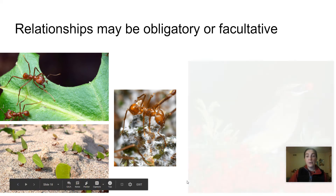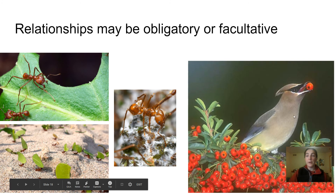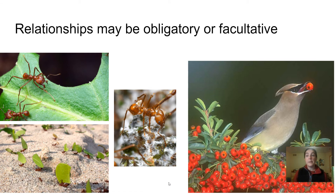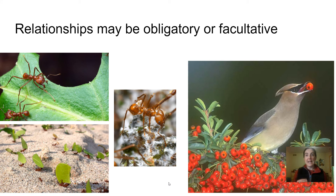A facultative mutualism would be something like a bird eating a berry and then dropping a seed somewhere else. It's beneficial to both — the bird is getting food, and the plant is getting its seed distributed. But there's no particular reason it has to rely on that one species. It doesn't have to be that kind of bird; lots of birds usually eat those seeds and distribute them. So it is a mutualistic relationship, but it's not absolutely necessary for those two specific species to interact with each other in order to get those benefits.